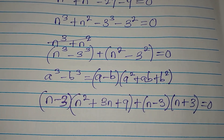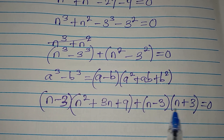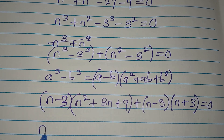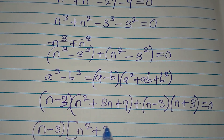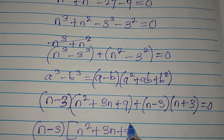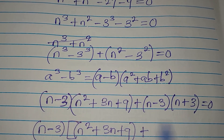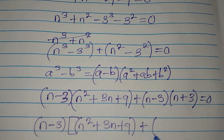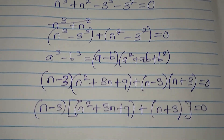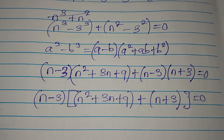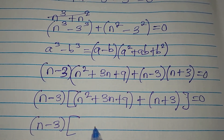We equate everything to zero. Now if you look at these two factors, n minus 3 is present in the first part, and n minus 3 is present in the second part, so it will come out as a common factor. Then inside we have n squared plus 3n plus 9 in bracket, plus n plus 3, and we equate everything to zero.